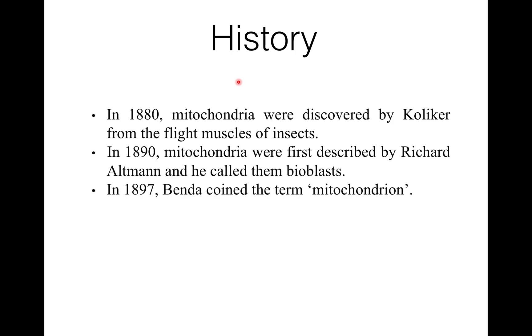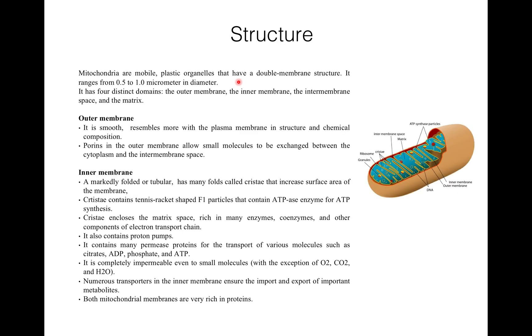In 1897, C. Benda coined the term mitochondria, because they are thread or rod-like structures. Mito means thread and chondrin means granules. In flight muscles of insects, the number of mitochondria is about four lakh to five lakh.